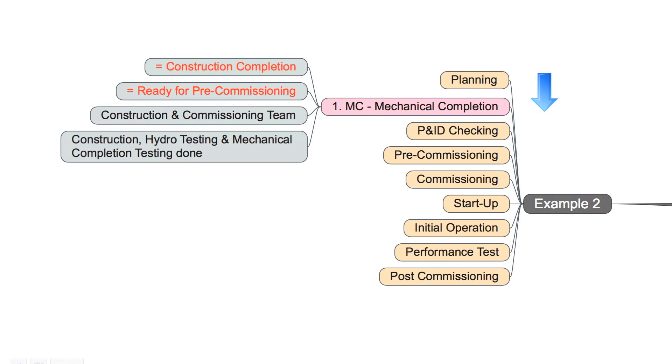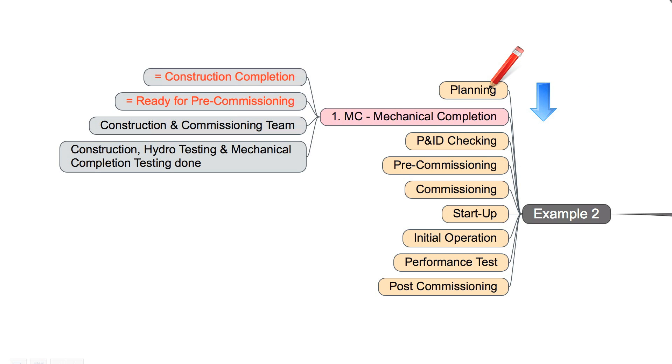It starts as well with planning. Then we have the mechanical completion milestone, P&ID checking, pre-commissioning, commissioning, startup, initial operation, performance test, post-commissioning. But here mechanical completion means it's the same like construction completion, and this is the same like ready for pre-commissioning. The construction and commissioning team is normally involved in this task. And in detail it means construction done, hydro testing done,